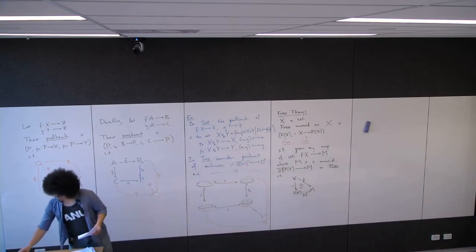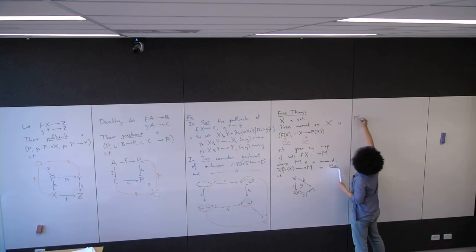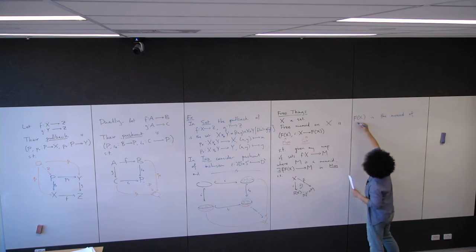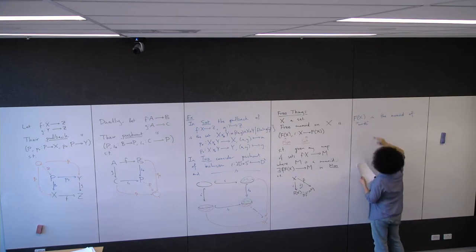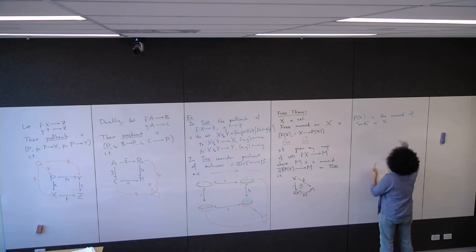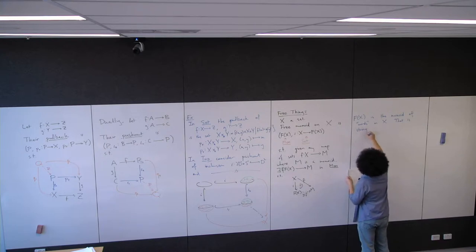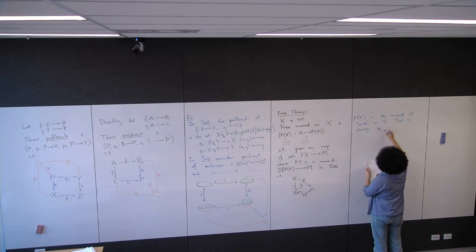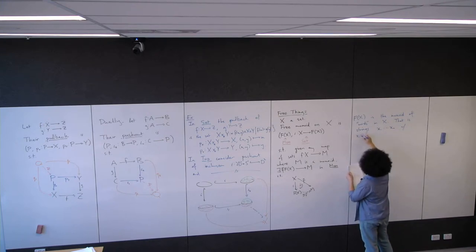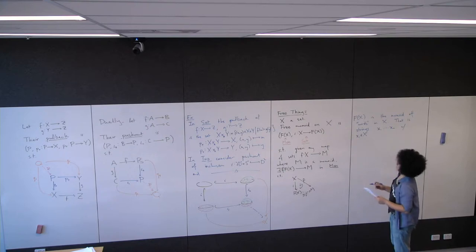What is F(X) in this case? F(X) is the monoid of words in X — that is, strings x_1, …, x_n with x_i in X. It's just strings of elements of the set, which you can think of as an alphabet.